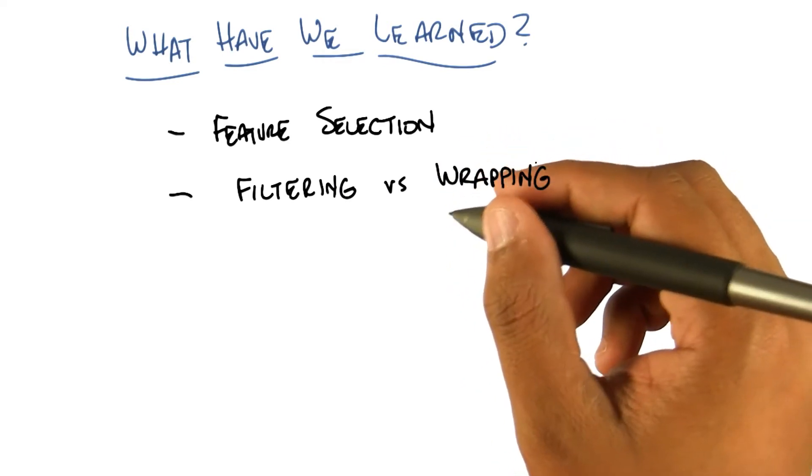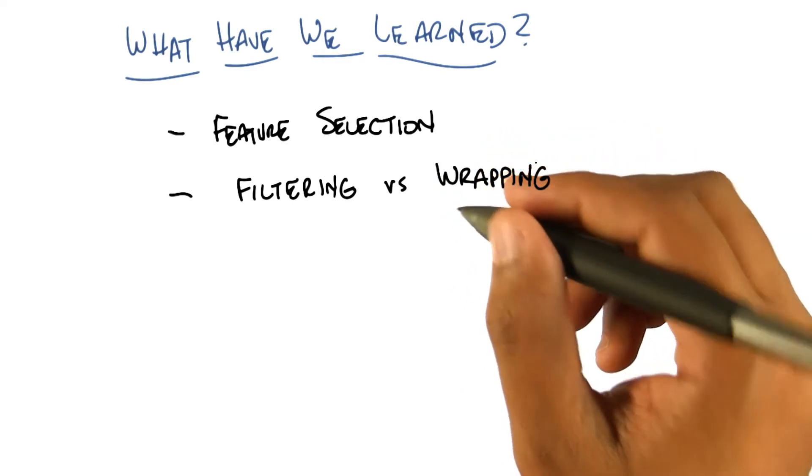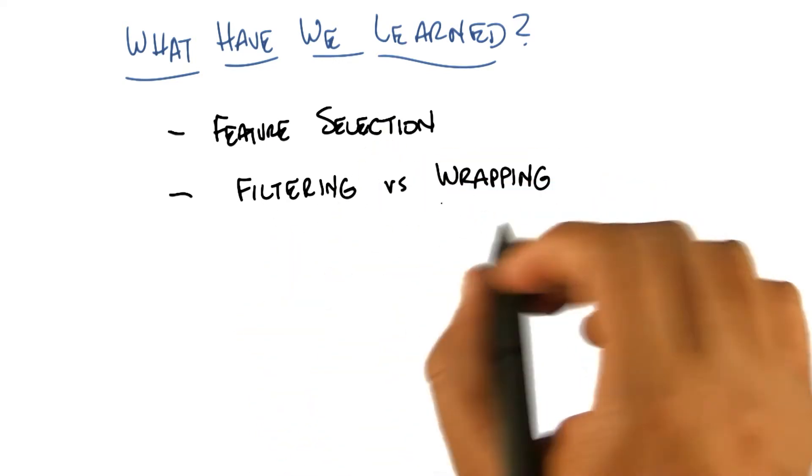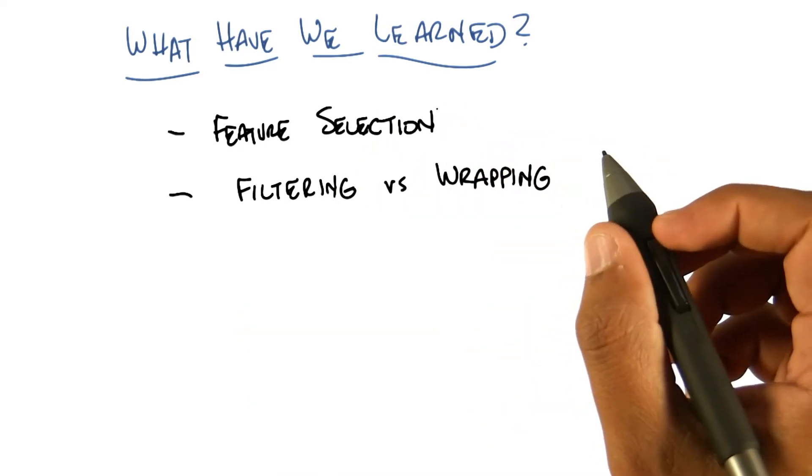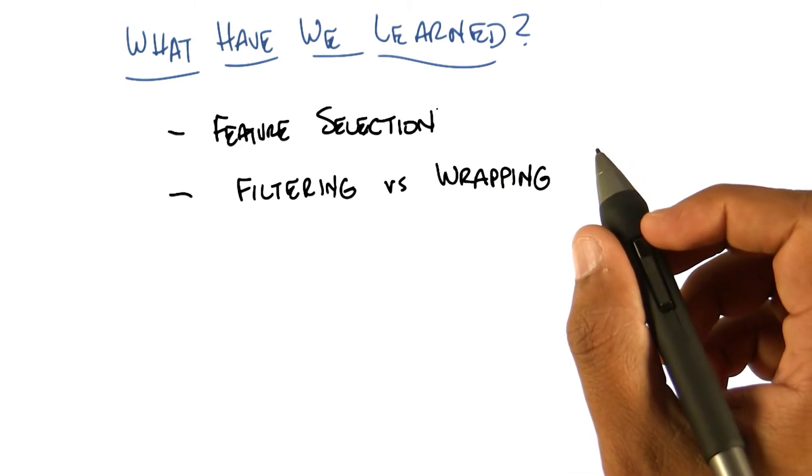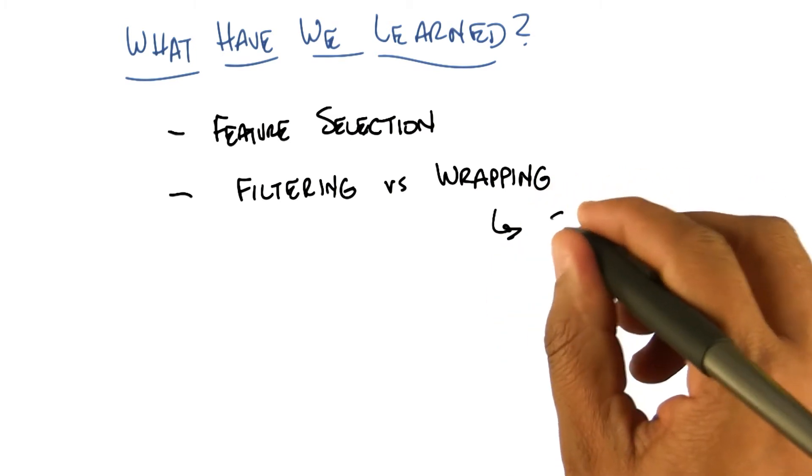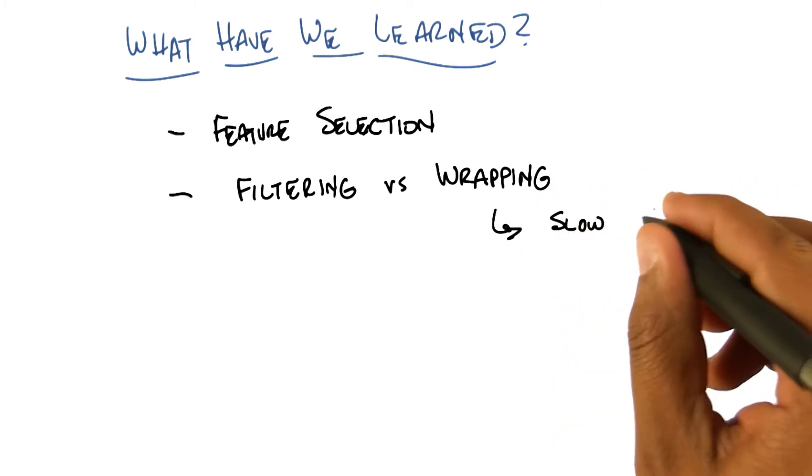So what else did we learn besides you like sound effects? So we learned about feature selection, we defined that. We discussed the difference between filtering methods for feature selection and wrapping methods for feature selection. What did we learn about them? That wrapping is slow, but actually seems like it solves the problem that matters. Yeah, so let's call that slow, but useful.